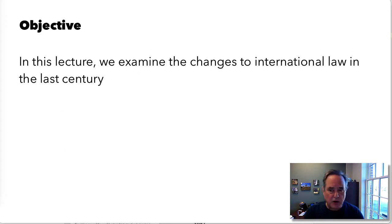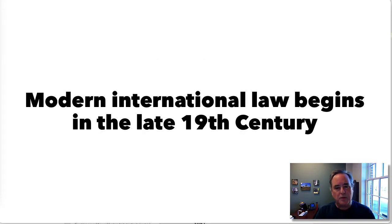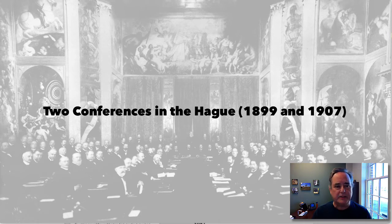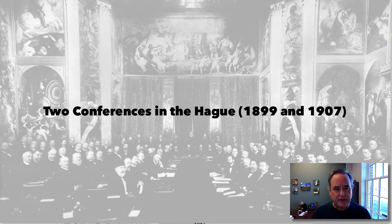In this lecture, we're going to examine the changes to international law in the last century. Modern international law begins in the late 19th century, and it really begins with two worldwide conferences held in The Hague in the Netherlands. The first Hague conference brought together, as an integrated package, a set of ideas and principles that had been swirling around in global society for a good 35 years.